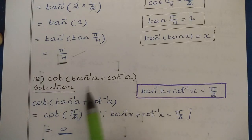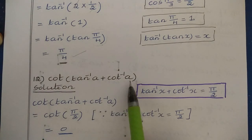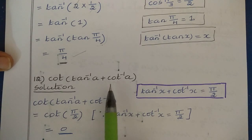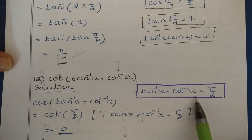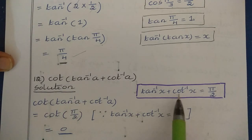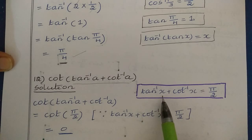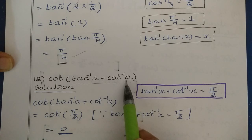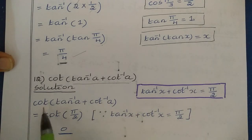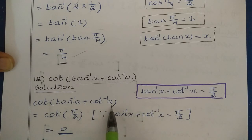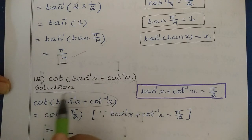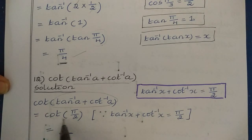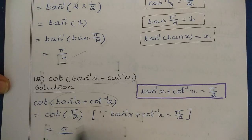Question number 12: find cot(tan⁻¹a + cot⁻¹a). We can directly use the formula tan⁻¹x + cot⁻¹x = π/2. With x = a, we have cot(tan⁻¹a + cot⁻¹a) = cot(π/2). Since cot(π/2) = 0, the final answer is 0.